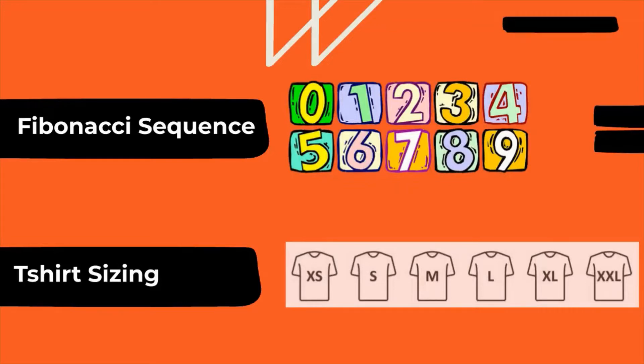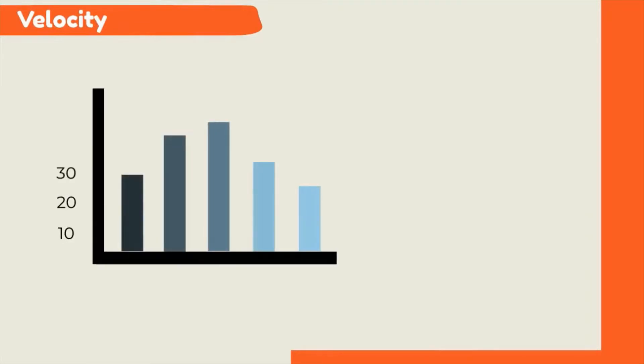Story points are very useful as they help the team to define their velocity. The velocity is the measure of how many story points the team can take into a single sprint and is the key metric in Scrum.